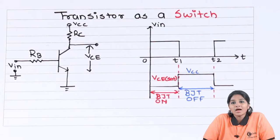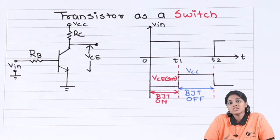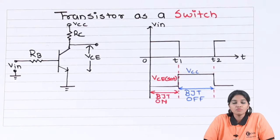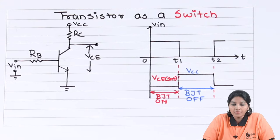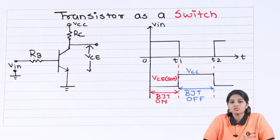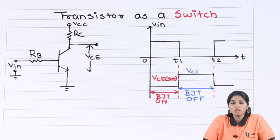We know that we can use transistors in many applications, or we can say transistors are the basic building block of any electronic circuit. We can use a transistor as a switch or as an amplifier. When we use a transistor as a switch, we need to bias it either in the active, saturation, or cutoff region.